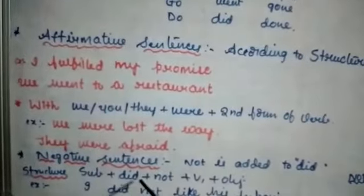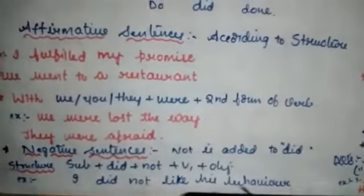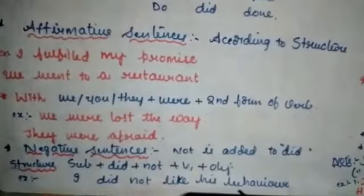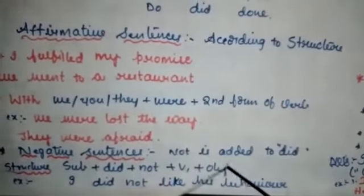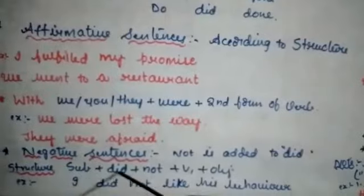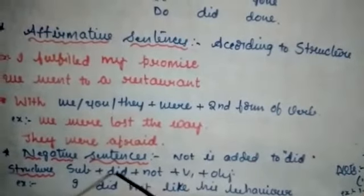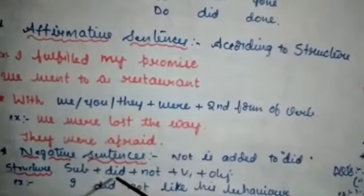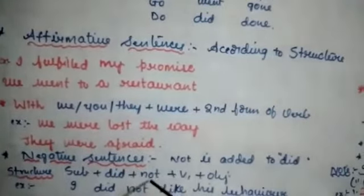Remember: after 'did', V1 comes — for example, 'did not go'. For example: 'I did not like his behavior.' Here 'did not' is the helping verb, 'like' is V1, and 'his behavior' is the object. So V1 comes with 'did'. 'Did' is the helping verb in simple past for negative sentences, and 'not' is added to make negative sentences.